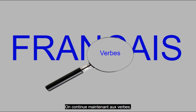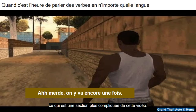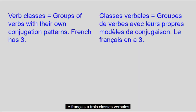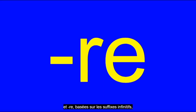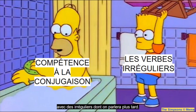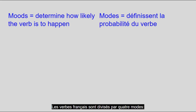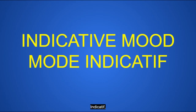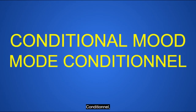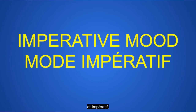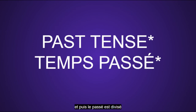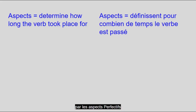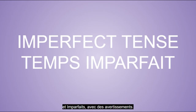Now we move on to verbs, which are a more complicated section in this video. French has three verb classes: -er, -ir, and -re, based on infinitive suffixes, as well as some irregulars we'll talk about later. French verbs are divided into four moods: indicative, subjunctive, conditional, and imperative, as well as four tenses: present, future, and then the past is split into perfective and imperfective aspects, with some caveats.